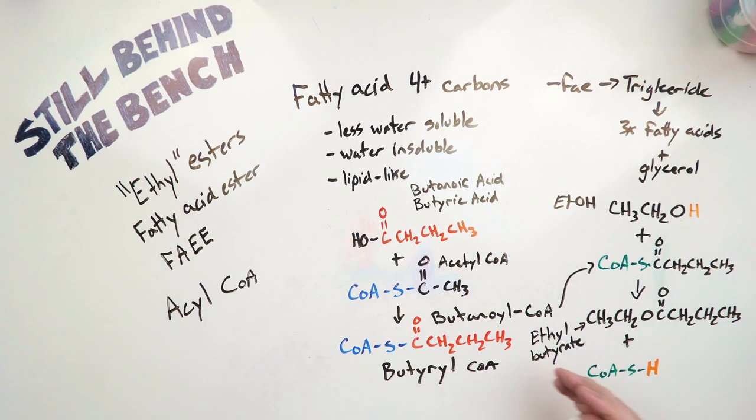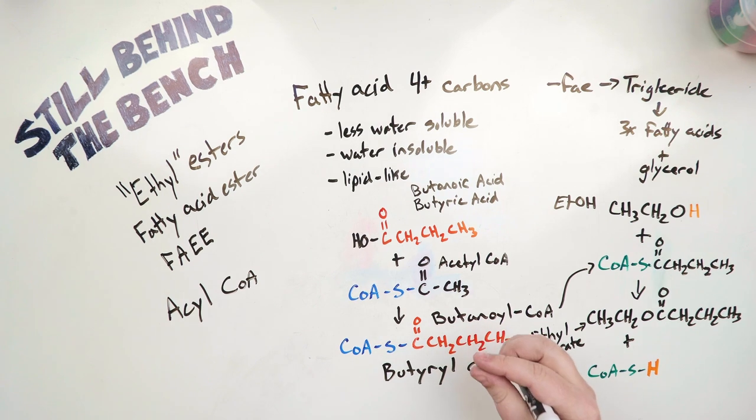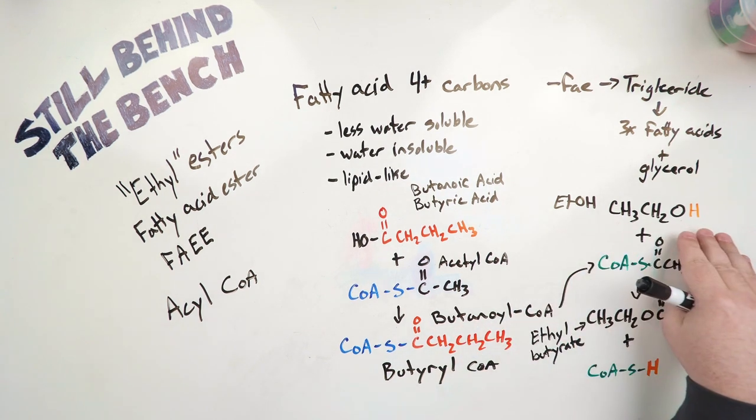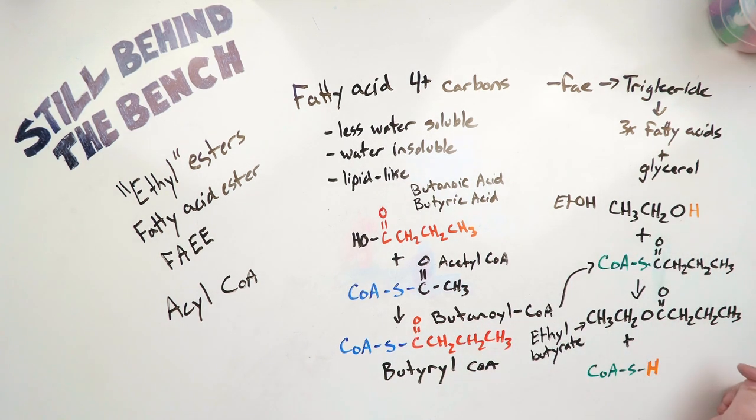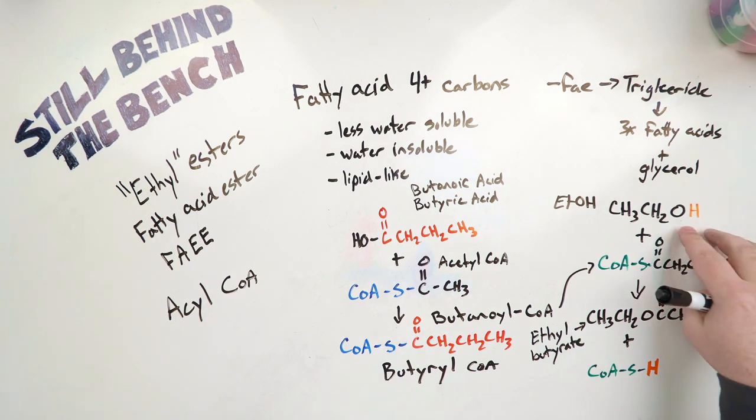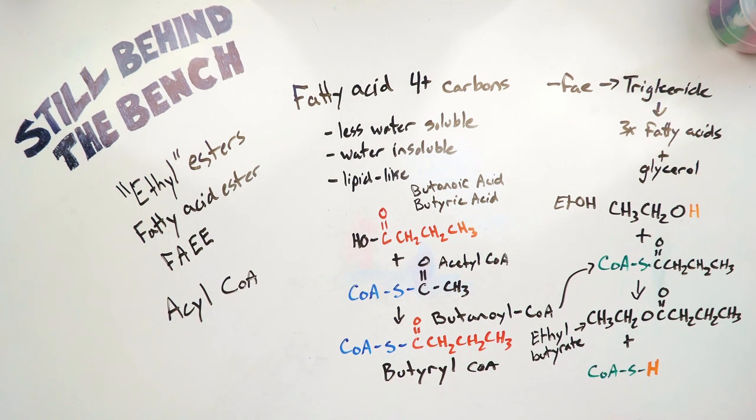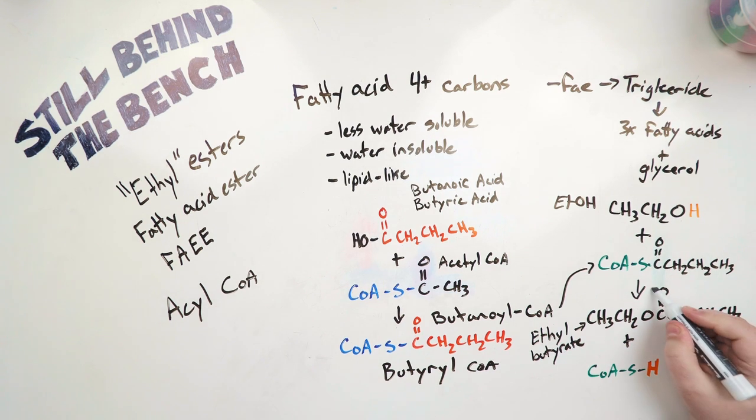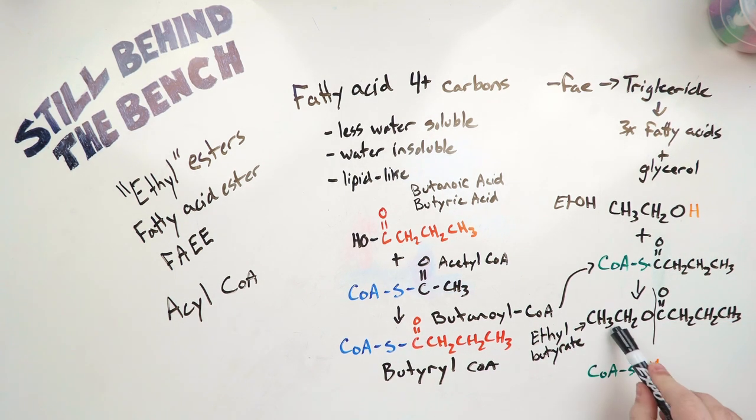So then the next step is similar to the steps taken with the acetate esters. You have your alcohol. In this case, again, I colored the H because it's what's going to be removed in this case. The coenzyme A and the hydrogen get combined, and the butanoyl gets attached onto the back end of this ethanol. So the line is right here. There's our ethyl group.